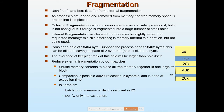For internal fragmentation, consider an example where 15K is free but a process only needs 10K. When we place the process in that partition, the remaining 5K cannot be allocated to any other process. This is internal fragmentation — the allocated memory is slightly larger than the requested memory, and the difference is wasted inside the partition.